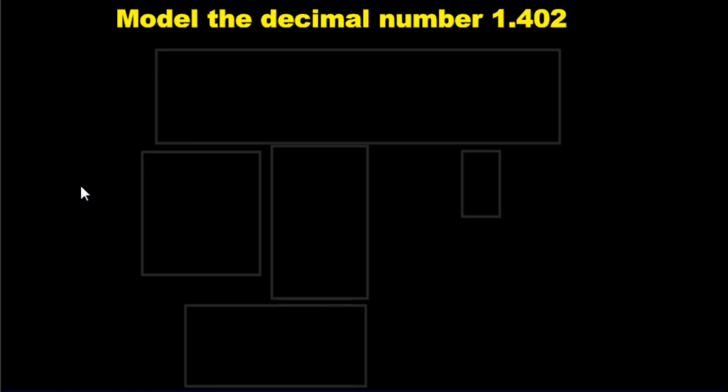Let's use that knowledge now and learn how to represent numbers using these blocks, and then how to add numbers using these base ten blocks, which is our ultimate goal here in the lesson. If it says model the decimal number 1.402, and if you read it properly, you need to say it like this: